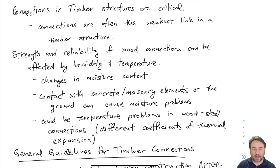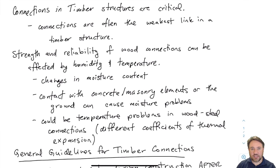If there are really wide temperature swings and steel is connected to timber, the steel and timber have different coefficients of thermal expansion, so one could tug or pull on the other in unexpected ways. We would expect those kinds of issues to occur mainly for much larger types of connections.